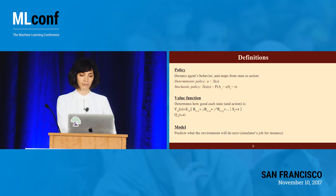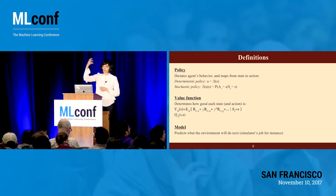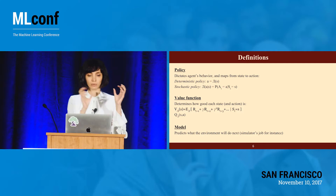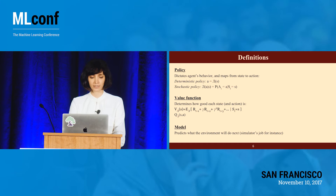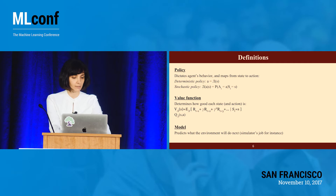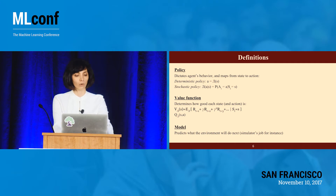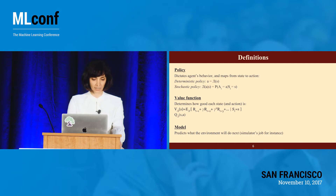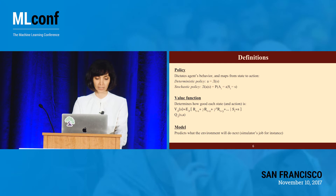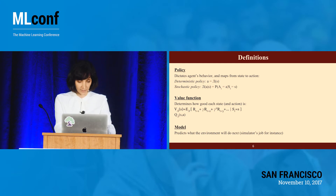A policy is a function from state to action — what would be the action — which can be a deterministic or stochastic policy, i.e., a distribution. Value functions describe objectively how good a state is in order to get to a final goal, or how good a state given an action is. The model is what a simulator does; in many cases with model-free algorithms, we don't have it.